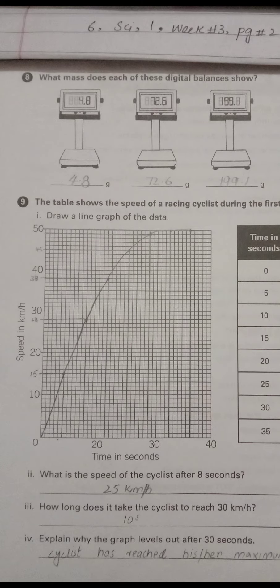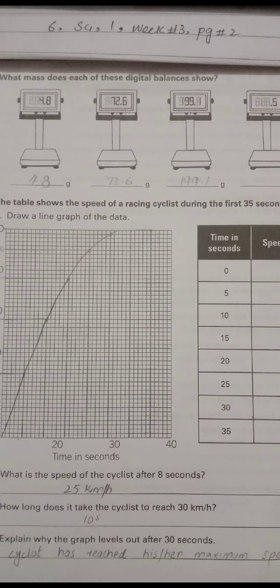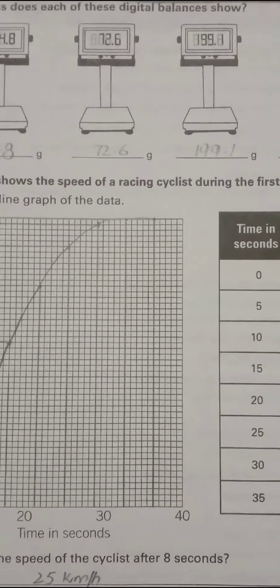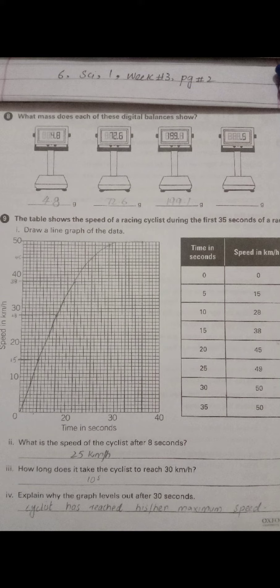Explain why the graph levels out after 30 seconds. The cyclist has reached his or her maximum speed. This is why our graph becomes constant at 50 km/h after that point.